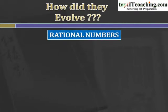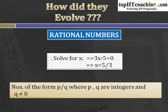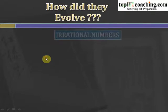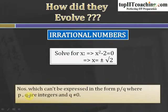Then came the system of rational numbers. If we have an equation 3x minus 5 equals 0, then x equals 5/3 — a fraction not included in natural numbers, whole numbers, or integers. So new types of numbers were devised called rational numbers: numbers of the form p/q where p and q are integers and q is not equal to 0. Then came irrational numbers — for example, if x squared minus 2 equals 0, then x equals plus or minus root 2, which cannot be expressed as p/q.